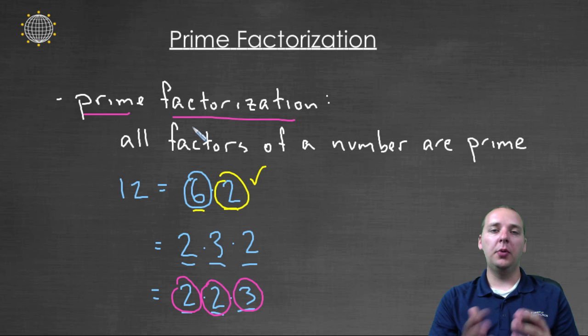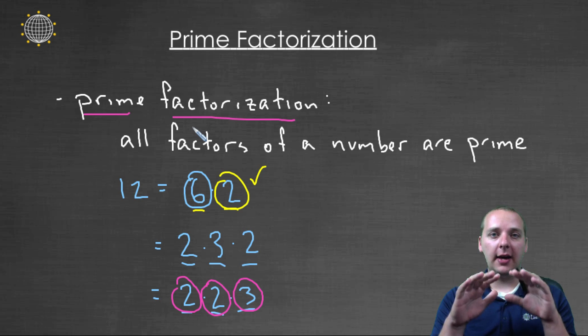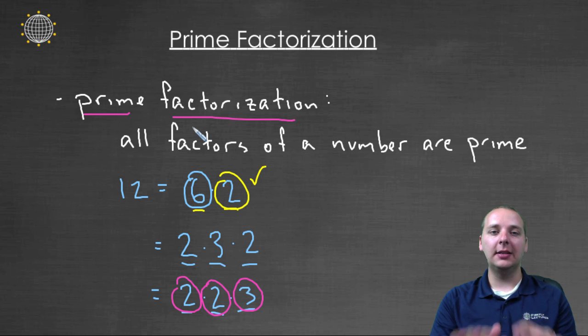Now earlier we were talking about how factorizations of numbers are not unique. You could factor twelve as six times two, or four times three, or twelve times one. However a prime factorization is always the same for a number. You can't have different prime factorizations for a number. Because once you get it down to that root level, that base level, then you'll have all the same prime factors at the bottom.